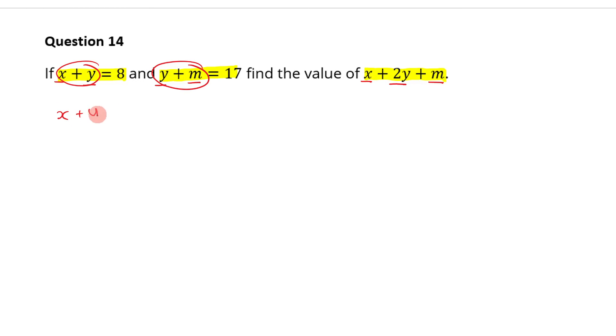So x plus y, and then I'm going to add this to it, plus y plus m. And that's going to leave me with x plus 2y plus m. Now the reason why that's important, because do you see how this is the same as this?